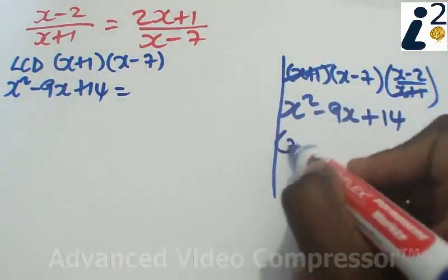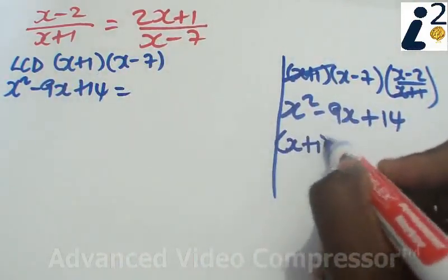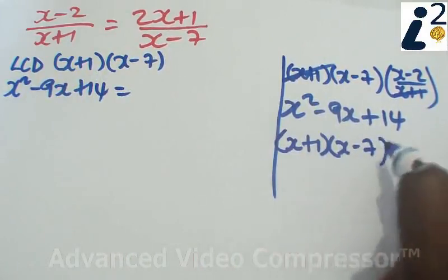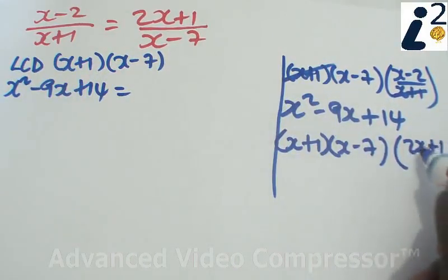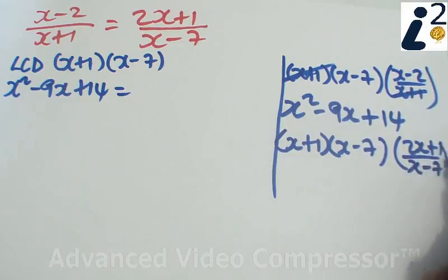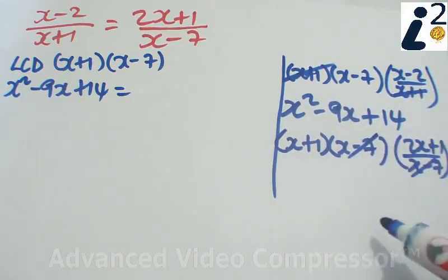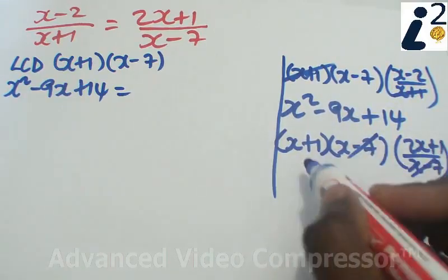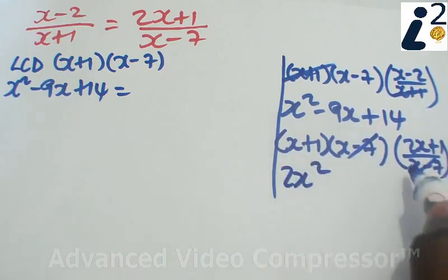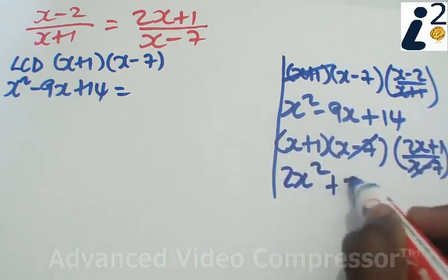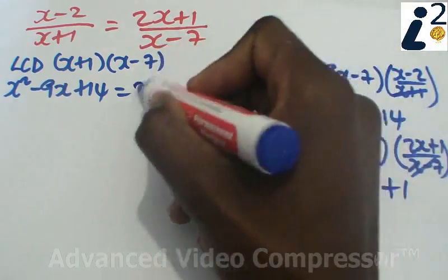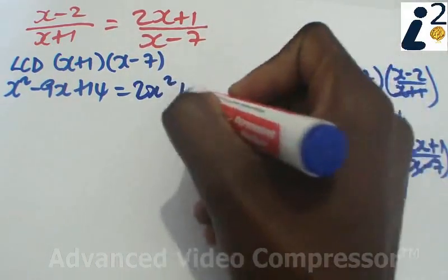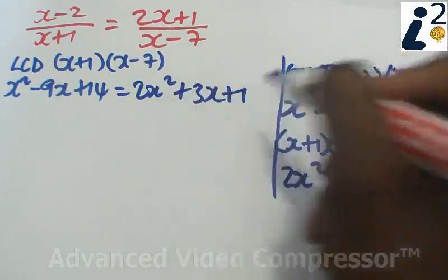On the right hand side we multiply the LCD, x plus 1, x minus 7 times the fraction there which is 2x plus 1 over x minus 7. The x minus 7 and x minus 7 is going to cancel out and we have 2x squared plus 3x plus 1. So on the right hand side we have 2x squared plus 3x plus 1.